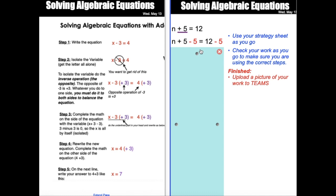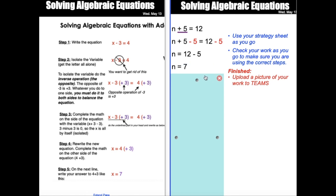In your head, plus five minus five is zero — if you're doing the inverse operation correctly it will always be zero — which means on the next line you have n by itself: n equals twelve minus five. Then the next step is to solve: twelve minus five is seven. So n equals 7. This is what it should look like when you're done — four separate lines. All the work you do today should be done with your strategy sheet in front of you.